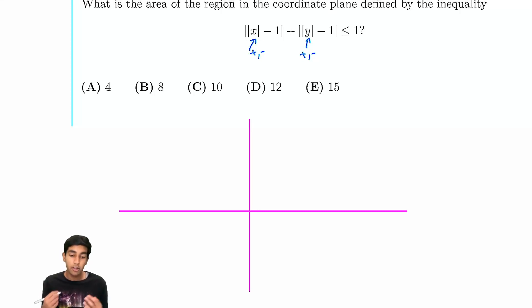So in the first case, x is positive, y is positive. What do we get? We get x minus 1 plus y minus 1 is less than or equal to 1. So what does this really mean? Well, this might kind of remind you of distance formula. And this is kind of like the taxi cab distance. You've heard of that term before.